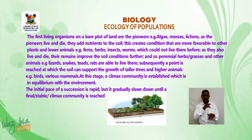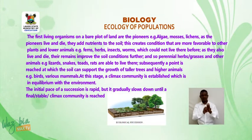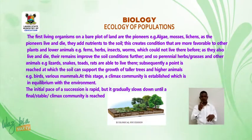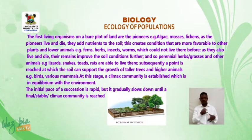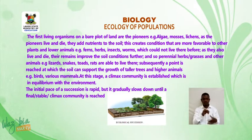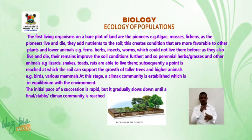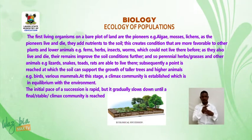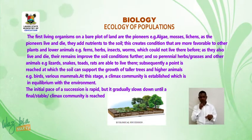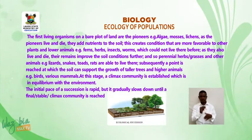The first living organisms on a bare plot of land are the pioneers — for example, algae, mosses, and lichens. As the pioneers live and die, they add nutrients to the soil. This creates conditions that are more favorable to other plants and lower animals, such as ferns, herbs, insects, and worms, which could not live there before.